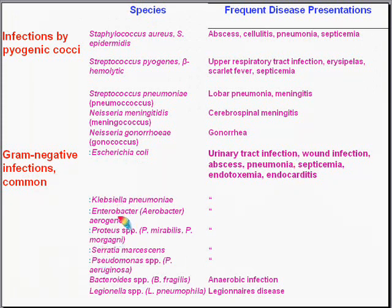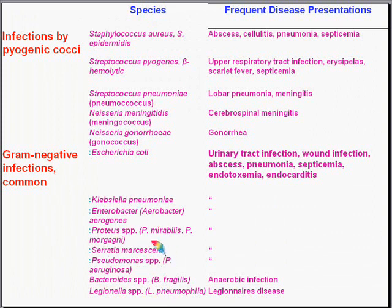Other important gram-negative bacilli include Klebsiella, Enterobacter (formerly called Aerobacter), Proteus, Serratia, Pseudomonas, Bacteroides, and Legionella. These all fall within the same general group of gram-negative bacilli infections.